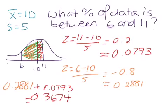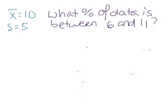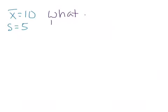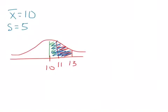We got lucky in this example because the two data points were on either side of the mean. If both data points were on the same side — say, finding the percentage between 11 and 13, both above the mean — you'd treat it the same way except instead of adding the two areas, you'd subtract them. Looking up 11 gives you one area, looking up 13 gives a larger area, and you subtract the smaller from the larger to get the region in between.